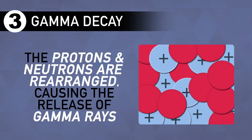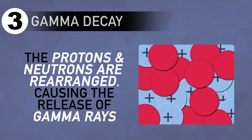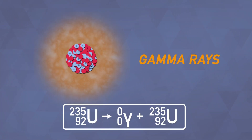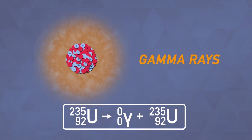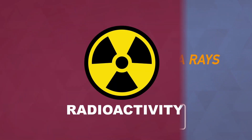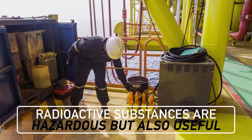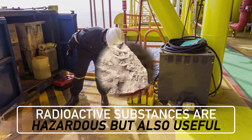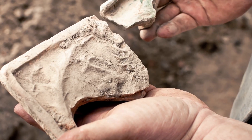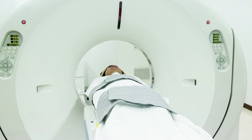Gamma decay is when protons and neutrons in the nucleus are rearranged to reduce the energy of an unstable atom. These rearrangements come with the release of energy in the form of gamma rays. Since the number of protons in the nucleus stays the same, no new element is formed. These spontaneous changes in nuclei are known as radioactivity. While radioactive substances can be hazardous, in some cases they can also be incredibly useful. They give us an accurate way to tell how old things are, they can be used to detect leaks in pipes, or even see where certain medicines go in your body.